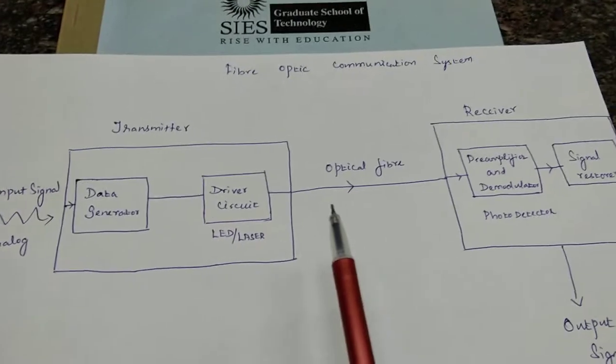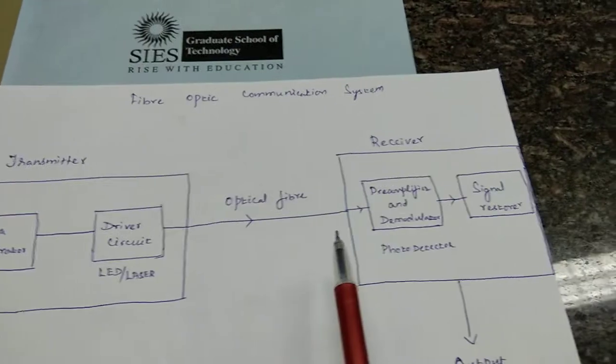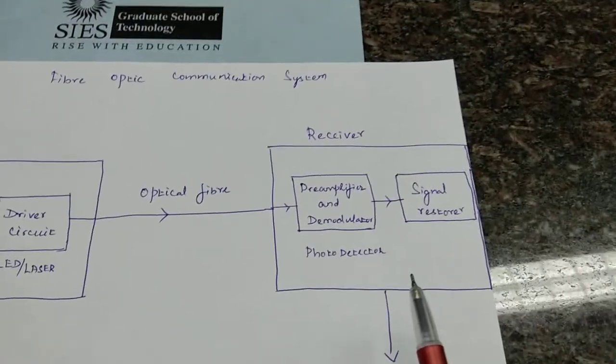So this light signal would pass through this optical fiber, it gets transmitted through a longer distance, and finally it reaches this receiver side.